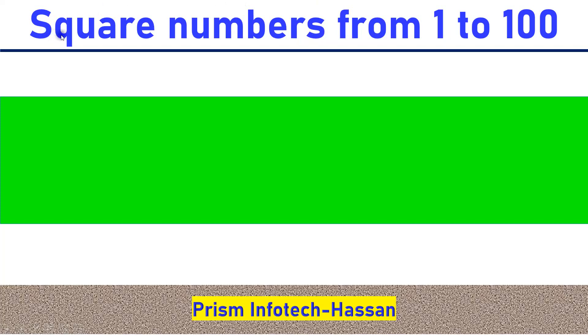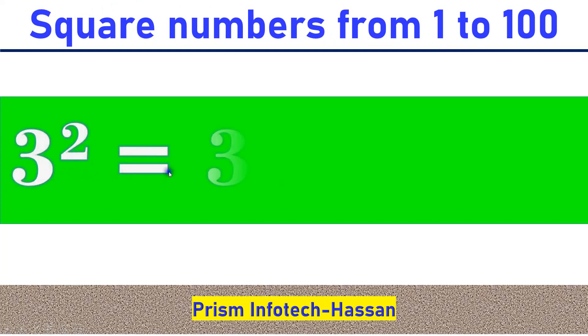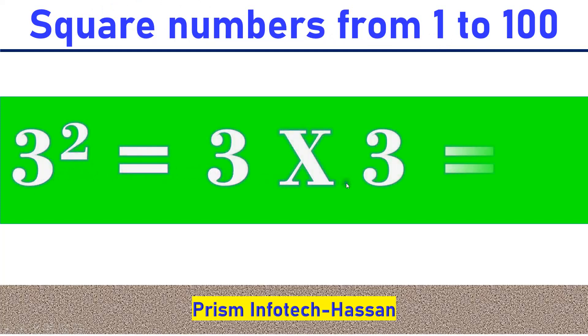Hi friends, today's topic is square numbers from 1 to 100. For example, 3 square is equal to 3 into 3, is equal to 9.